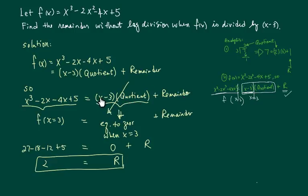When x equals 3 this chunk entirely disappears and the remainder is left. So all I have to do on the left hand side is evaluate the function at x equals 3. That happens to be 2 over here. So the remainder is 2 without doing long division.